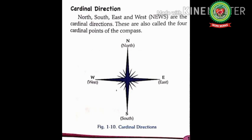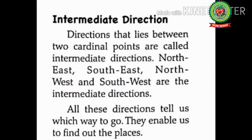North, south, east, and west are the cardinal directions. These are also called the four cardinal points of the compass — this is the other name of cardinal directions. The next type of direction is intermediate direction. Directions that lie between two cardinal points are called intermediate directions — mark this line, this is the definition of intermediate directions.